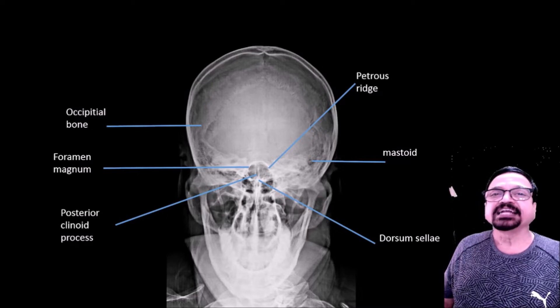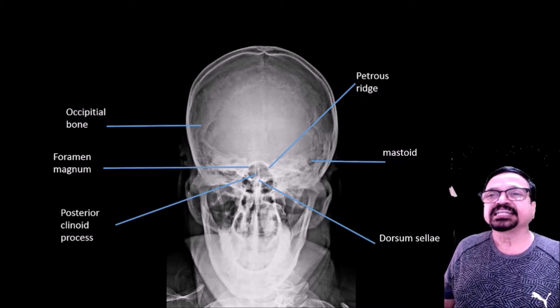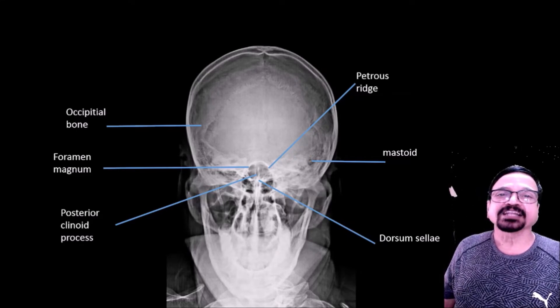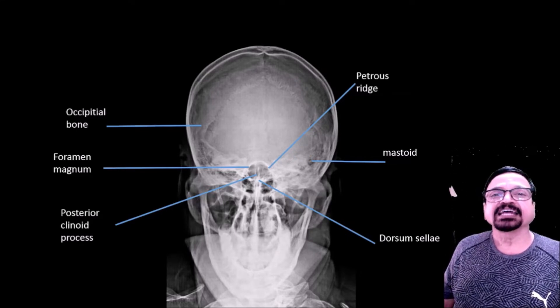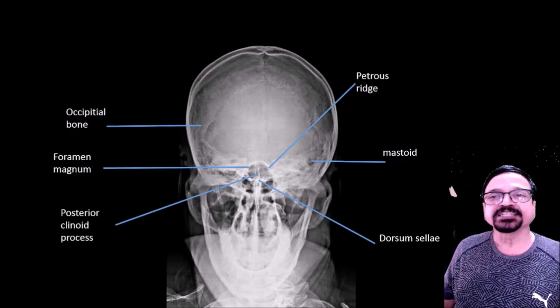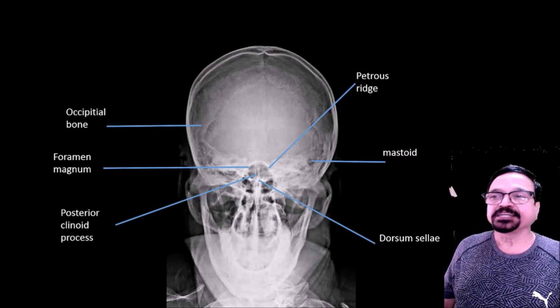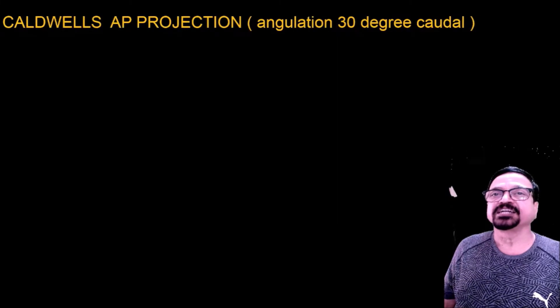The mastoids are seen on either side, and a symmetrical comparison of mastoids can be done in this projection. The occipital bone appears slightly elongated or magnified. Any pathology in the occipital region — especially fracture pathology — is best demonstrated in this view. The petrous ridge is also visible, making this a very useful projection for these anatomical areas.